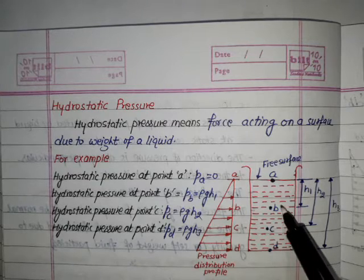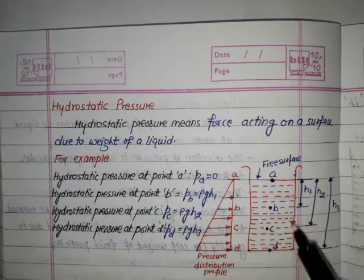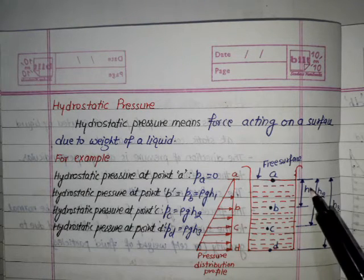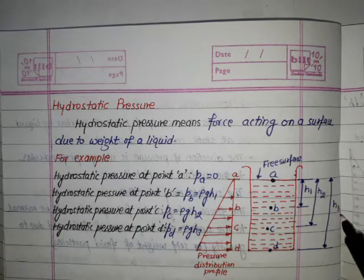Point B lies at a distance of h1 from the free surface, point C lies at a distance of h2 from the free surface, and point D is at a depth of h3 from the free surface.